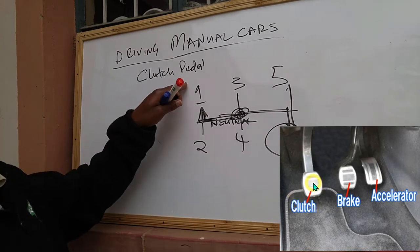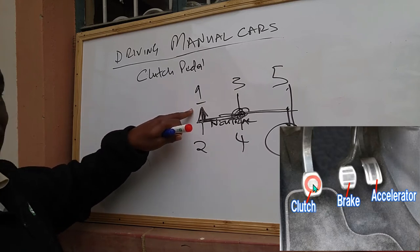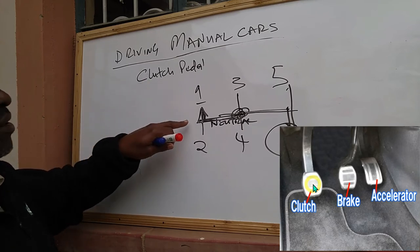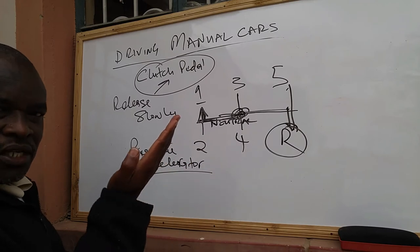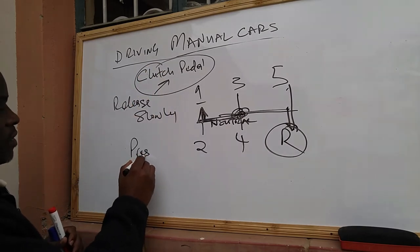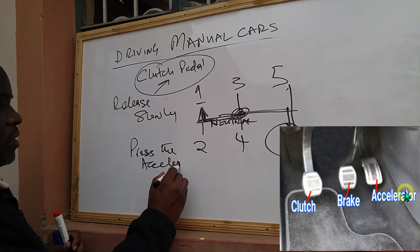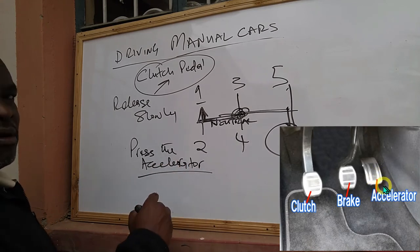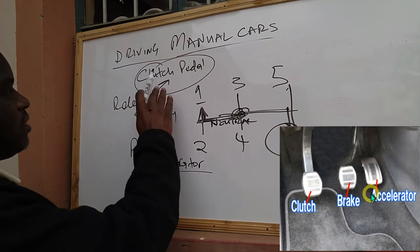You must always press the clutch pedal all the way down, then engage the gear. After engaging the gear — say the car is in gear number one and you've pressed down the clutch — if you want the car to start moving, you release the clutch pedal slowly, and as you release it, you press the accelerator pedal to give power to the engine and the vehicle will start moving.